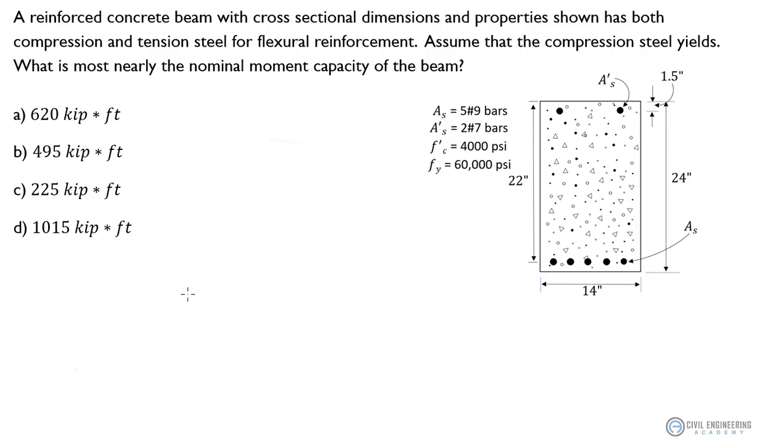Hey there, engineers. Welcome to Civil Engineering Academy, where we're looking at another problem from reinforced concrete design. And it reads like this. Reinforced concrete beam with cross-sectional dimensions and properties shown has both compression and tension steel for flexural reinforcement. Assume that the compression steel yields what is most nearly the nominal moment capacity of the beam. Well, we're given a few properties here.